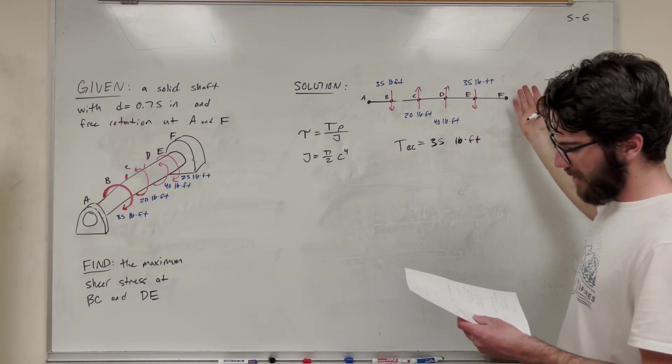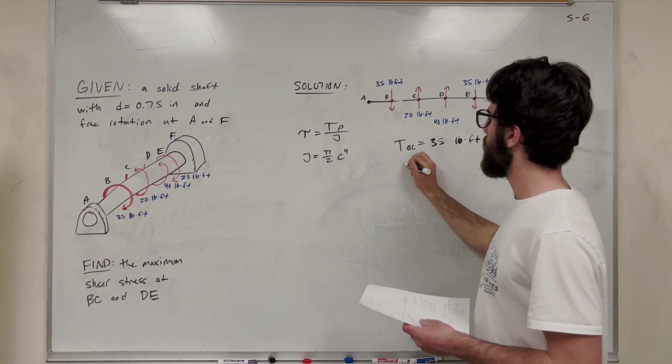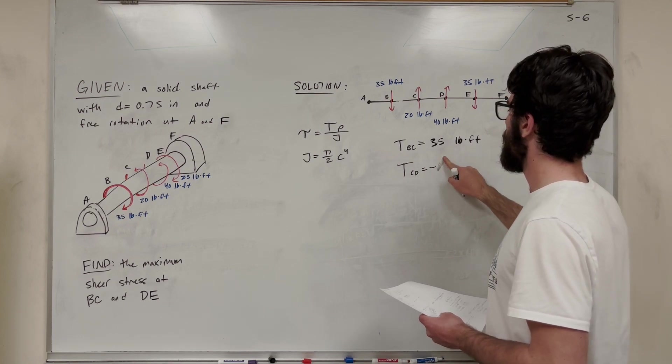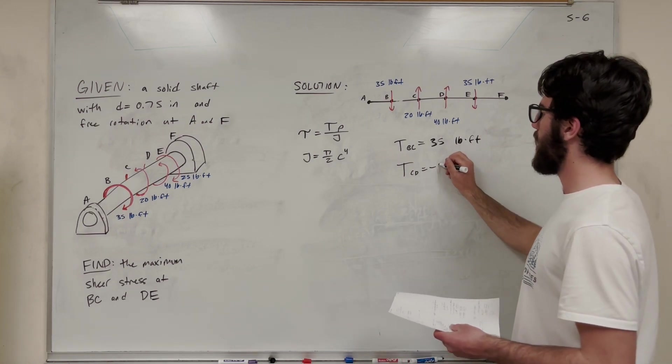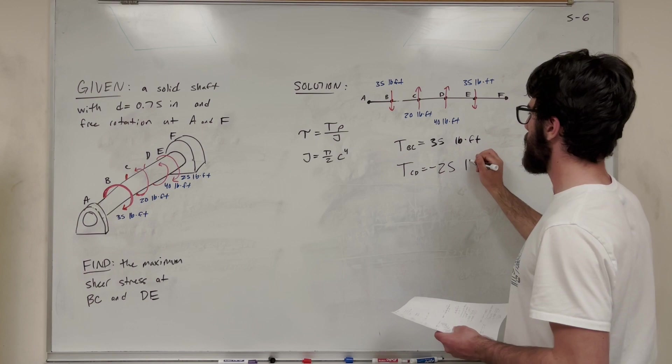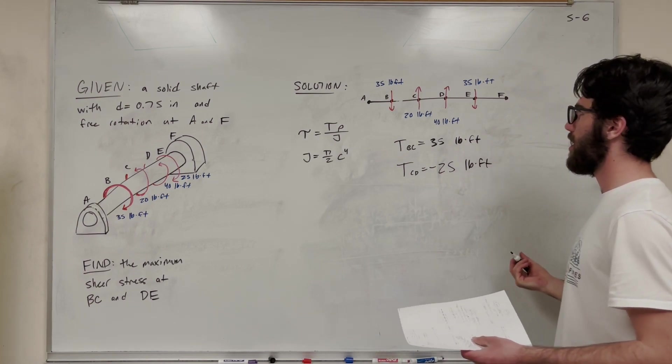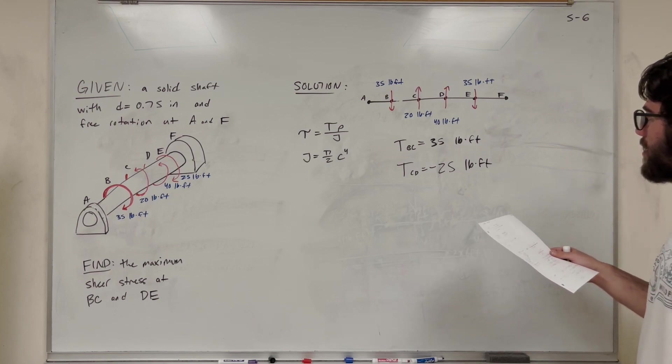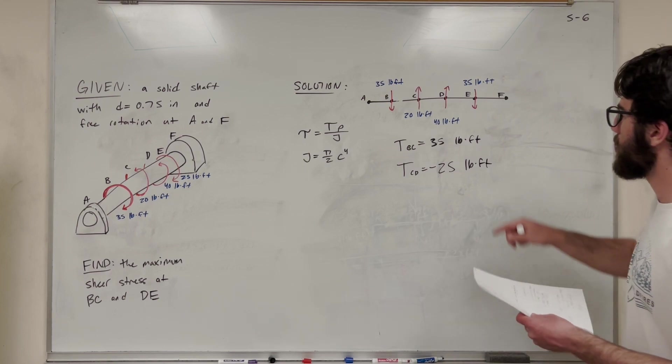So yeah, we get negative 25 is our torque there. So torque CD is equal to negative 25. It doesn't really matter which one you make the positive or negative because we're looking for max torque in this case. So that's why I'm not really accounting for that. But also...oh, this is 25 or 35? One of these numbers is wrong. This is supposed to be a 25.